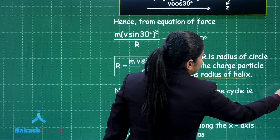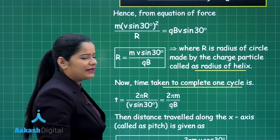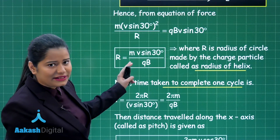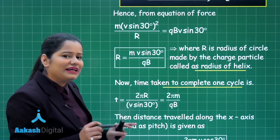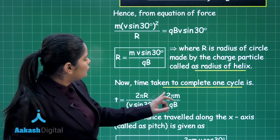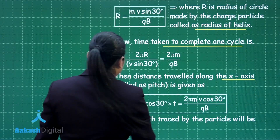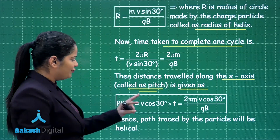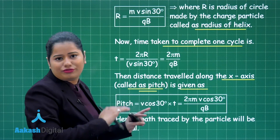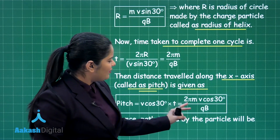We can also calculate the pitch — the distance covered by the charged particle per cycle. The time period is 2πr / V sin 30, which substituting the radius gives T equals 2πm / QB. The pitch is the parallel component of velocity V cos 30 multiplied by this time period, giving pitch equals 2πmV cos 30 divided by QB.